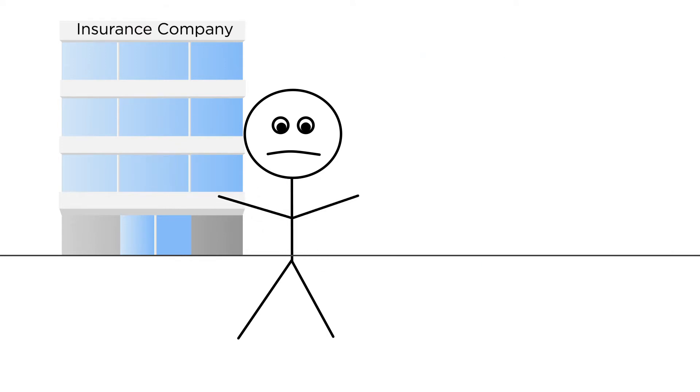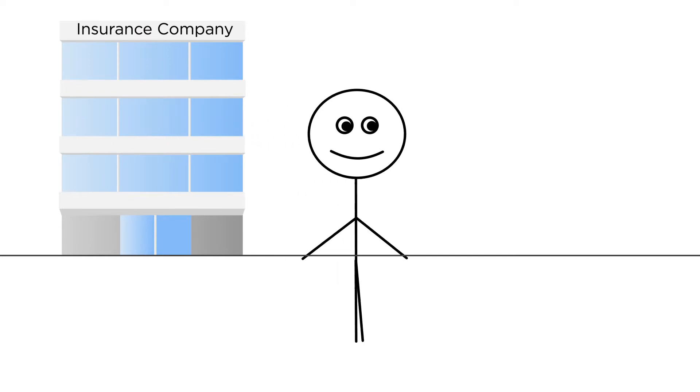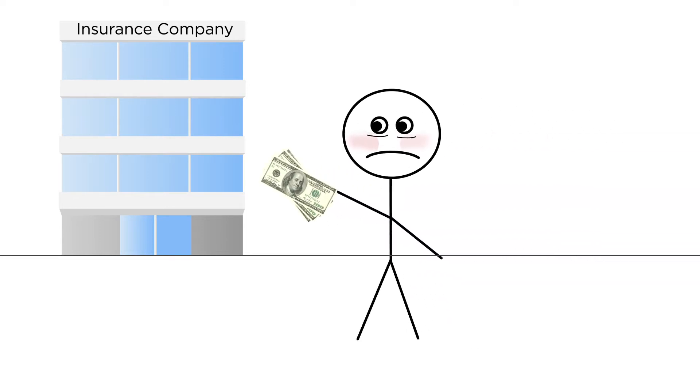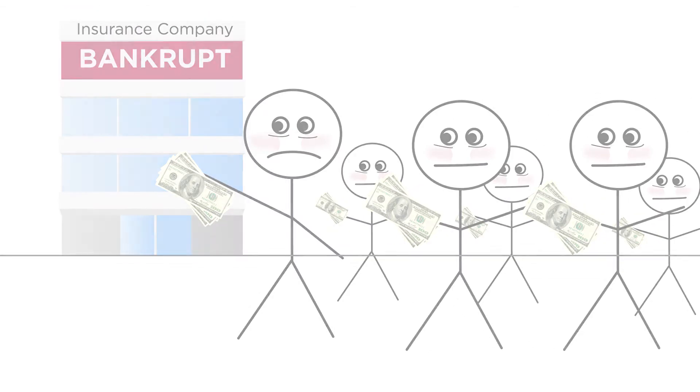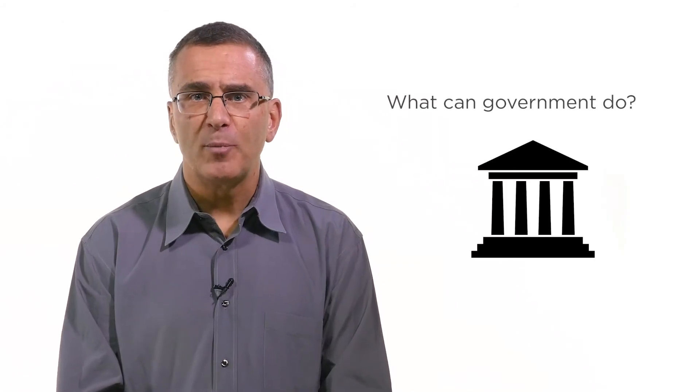But as we mentioned in this lecture, information asymmetry is a big problem in this market. Let's say you're healthy. Why spend $400 per month if you don't think you'll get sick? And let's say I'm sick. Then I'll definitely get health insurance ASAP. So this is a problem for insurance companies because they only end up insuring sick people, and they lose money. What can the government do to try to address this market failure?